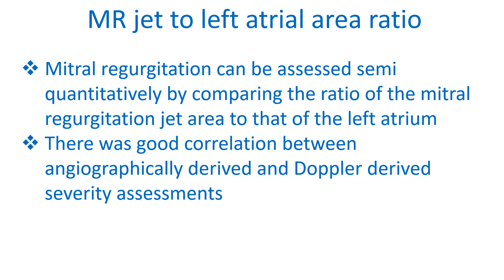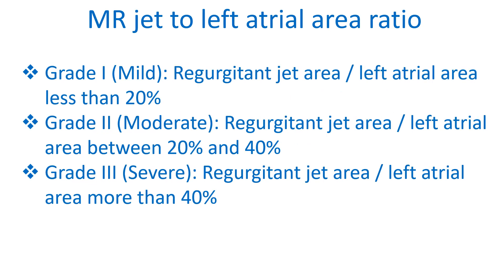Mitral regurgitation jet can be assessed semi-quantitatively by comparing the ratio of the mitral regurgitation jet area to that of the left atrium. There was good correlation between angiographically derived and Doppler-derived severity assessments. Grade 1, Mild: regurgitation jet area divided by left atrial area less than 20%. Grade 2, Moderate: ratio between 20 and 40%. Grade 3, Severe: ratio more than 40%.